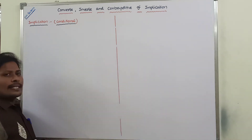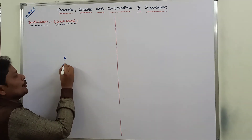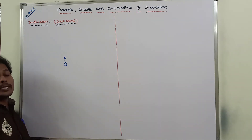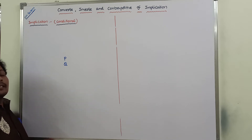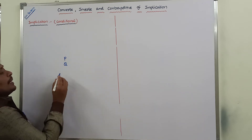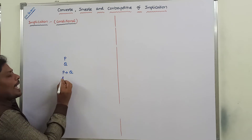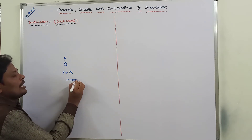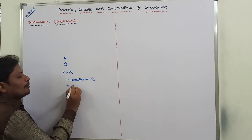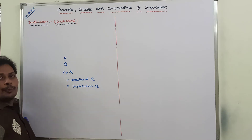Now let us consider two statement variables. P is one statement variable and Q is another statement variable. The conditional or implication between the two statement variables can be denoted by P conditional Q. This can be read as 'P conditional Q' or 'P implication Q'.